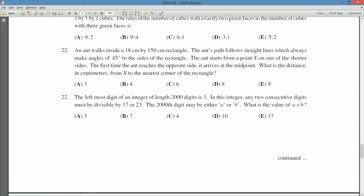Is 3. In this integer, any two consecutive digits, so what do they mean by that? They mean sort of a pair of digits. So you know, in 150, 15 is a pair of digits, 50 is a pair of digits. Any two consecutive digits must be divisible by 17 or 23. That's an odd set of numbers. The 2,000th digit could either be A or B. So we have some possibilities here. What is the value of A plus B?